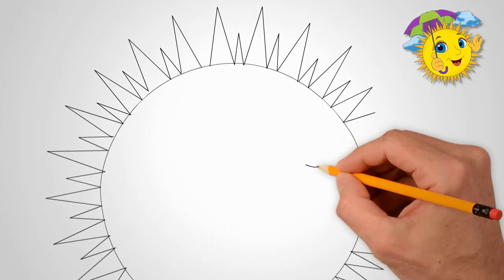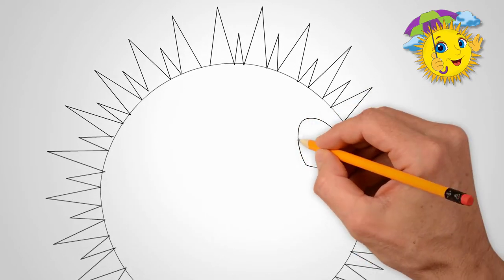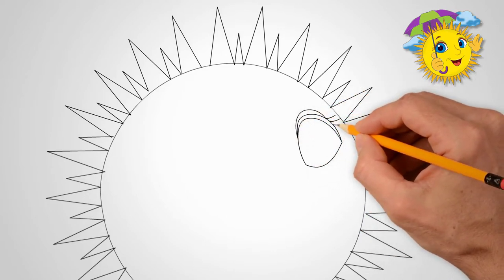First, draw the rays from above. And then draw the rays from below. Our circle has rays everywhere.